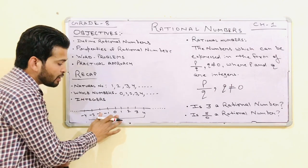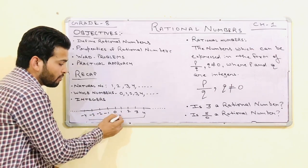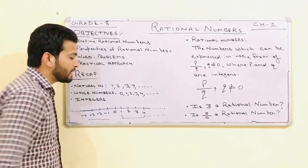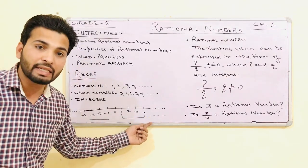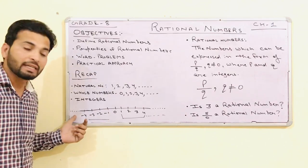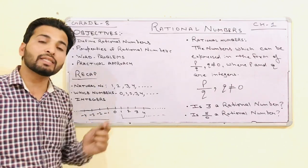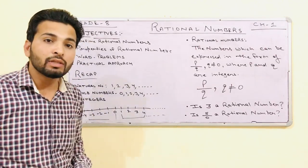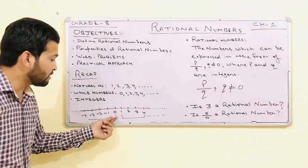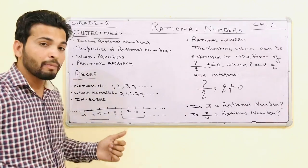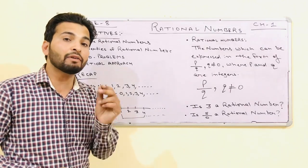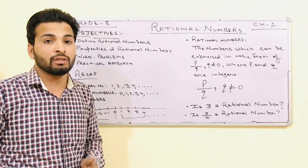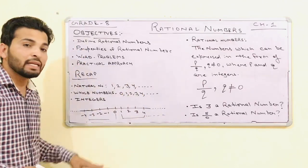There are two types of integers: 1 to infinite — these are known as positive integers. And minus 1 to minus infinite — these are known as negative integers. So the question is: what is 0? What sign do we put in front of 0? Zero is neither negative nor positive — it is just an integer.